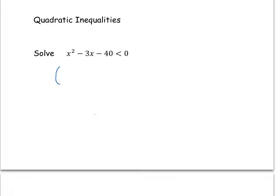So, we're going to have x and x. Because we've got a minus 40, we know that one of them is going to be positive, one is going to be negative. We need to write down the factors of 40. So, factors of 40 are 5 and 8,